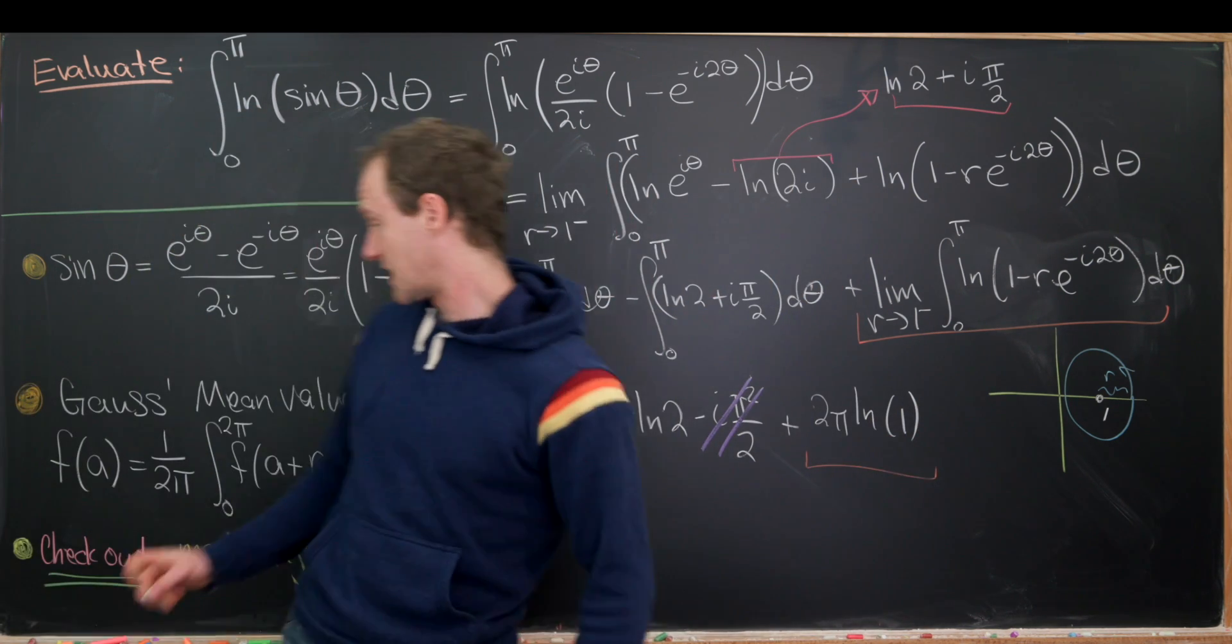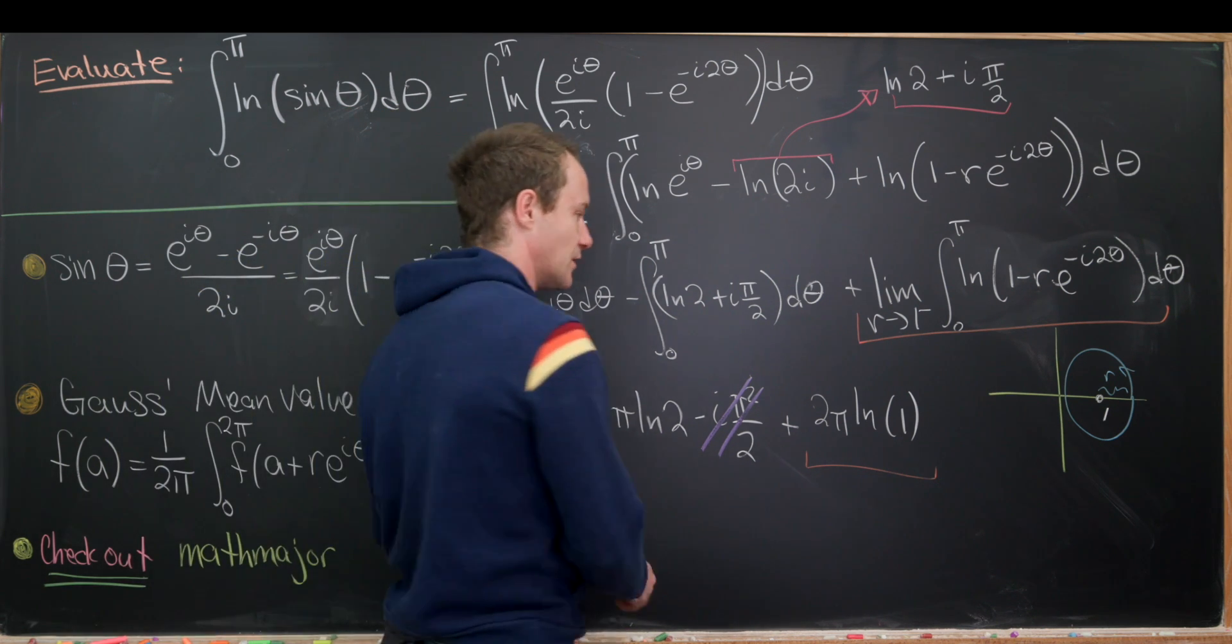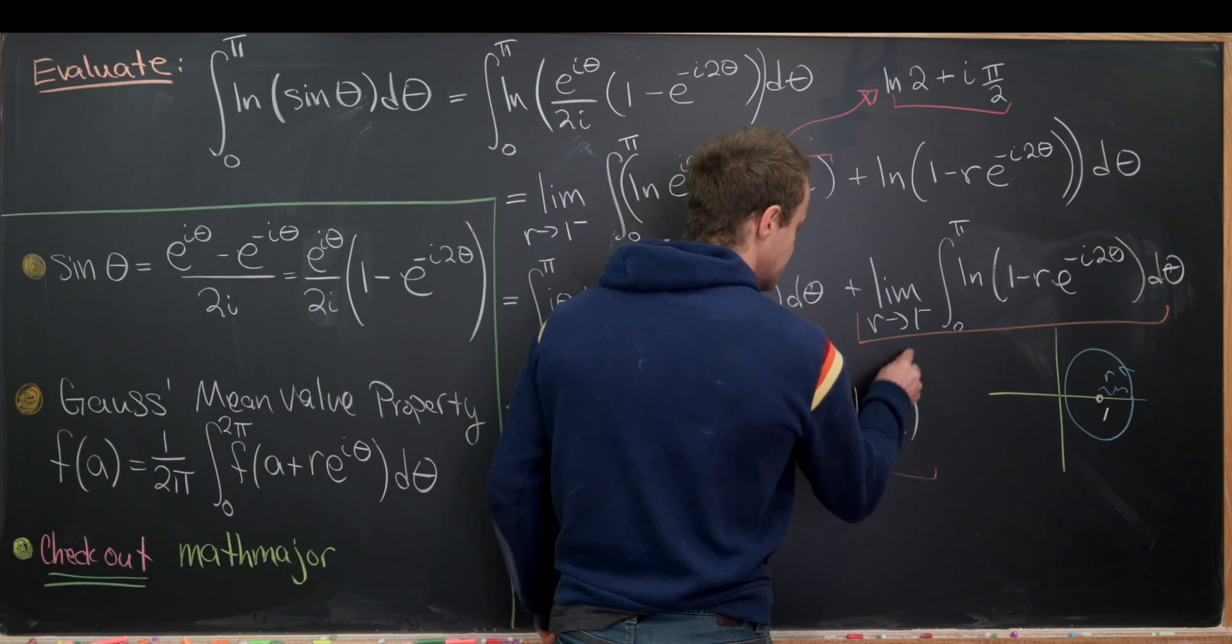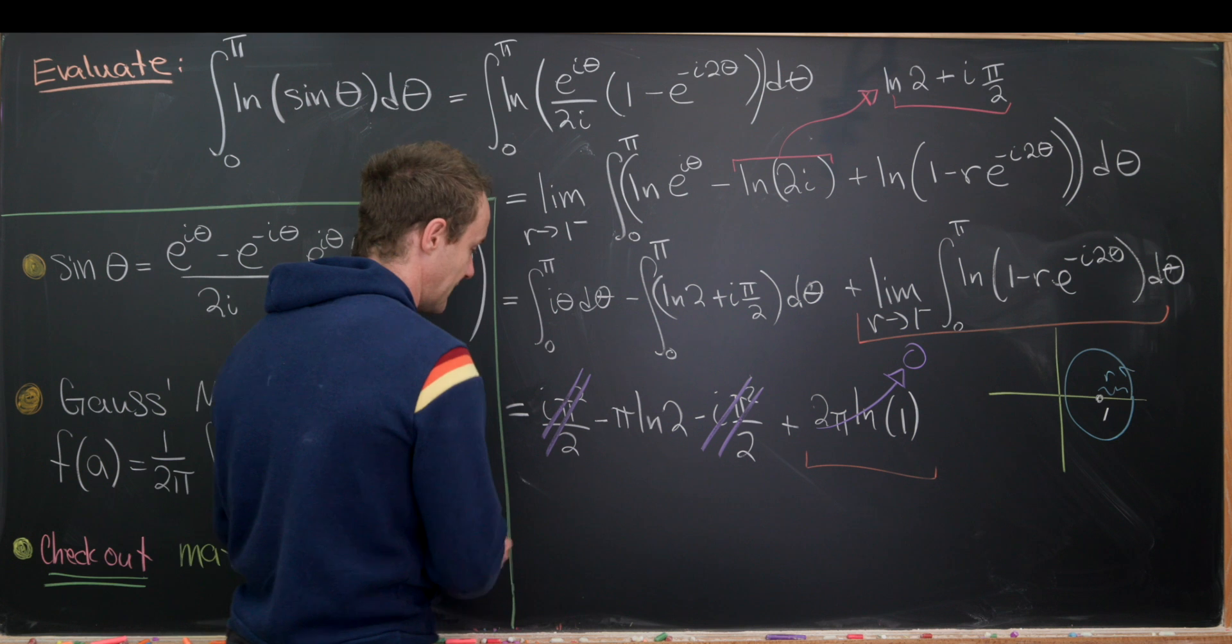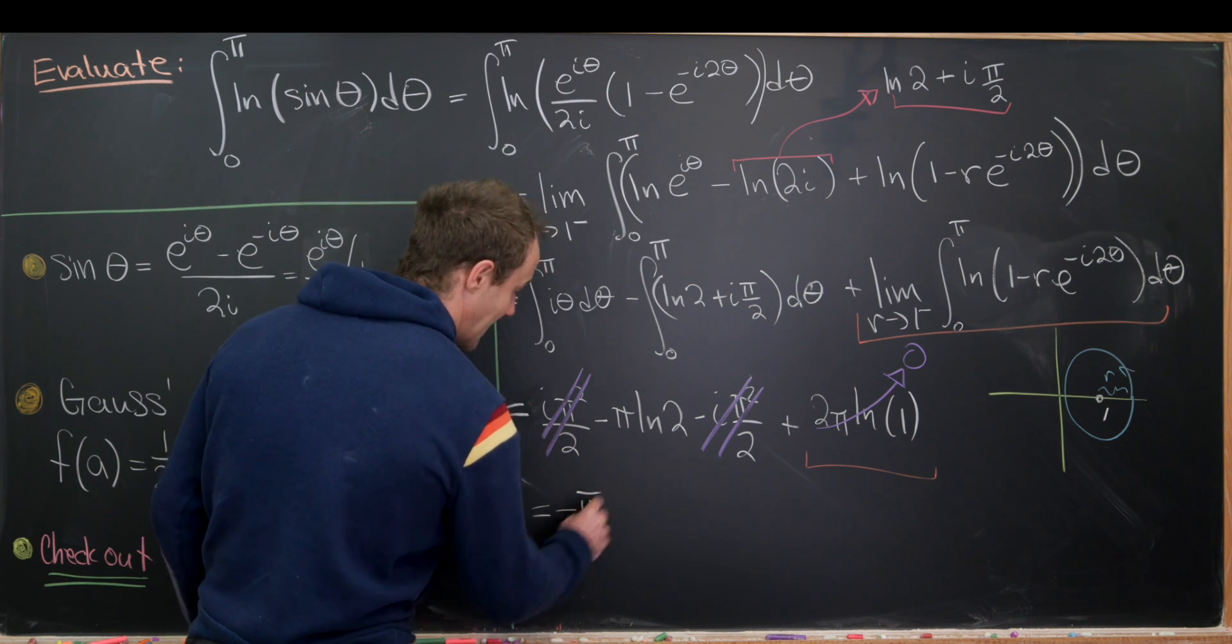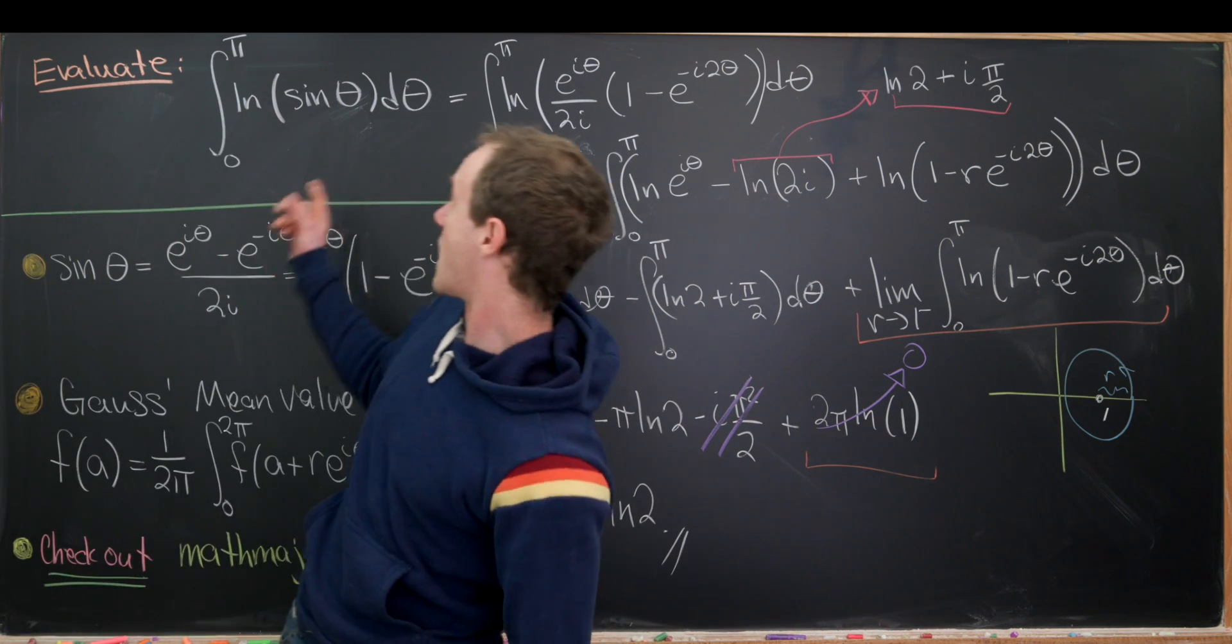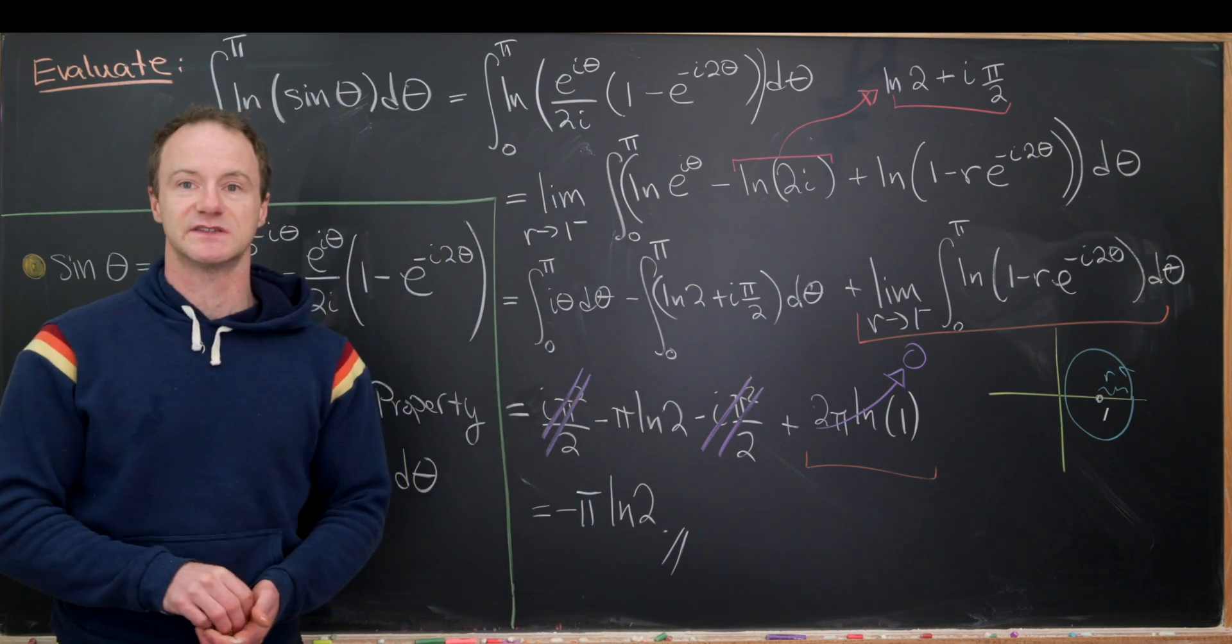So again, that's just a direct application of this Gauss mean value property. But the natural log of 1 is just 0. So this cancels out as well. And that leaves us with a single number right here, which is minus pi times the natural log of 2. And that would be the final value for our integral. And that's a good place to stop.